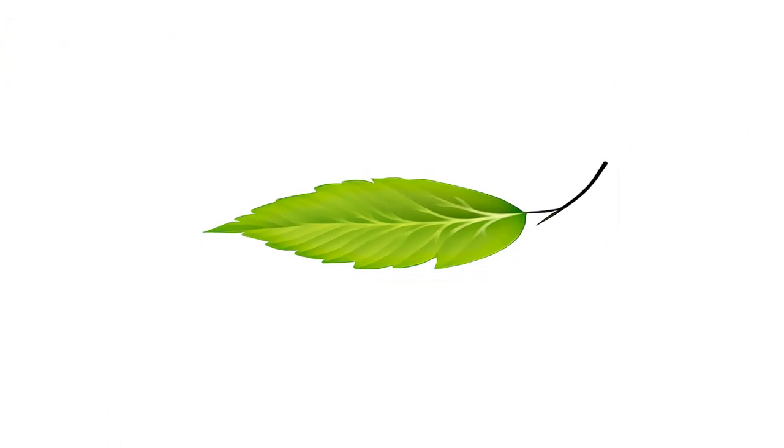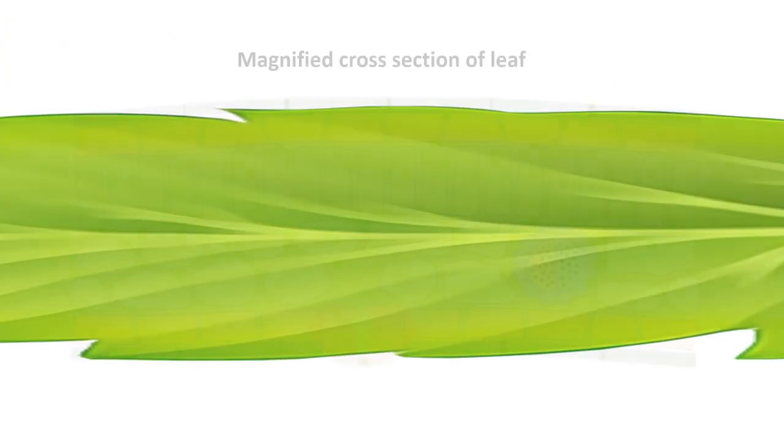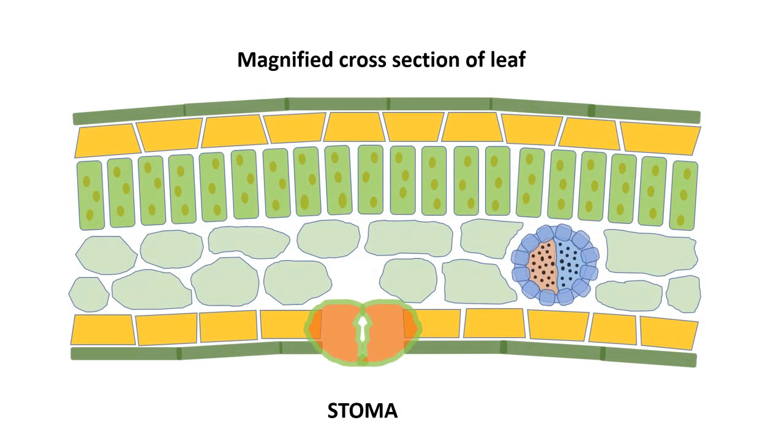Measurements of leaf stomatal conductance are important indicators of the physiological status of a plant. The opening and closing of stomata is the dominant factor in the conductance of leaf surfaces, controlling water loss in vapor form from plant leaves and the uptake of carbon dioxide for photosynthesis.